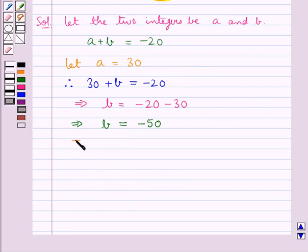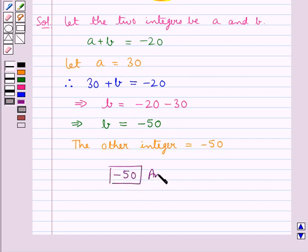We get the other integer is equal to minus 50. Minus 50 is the final answer. This completes the session. Hope you have understood the solution for this question.